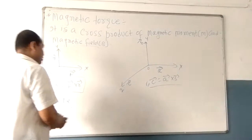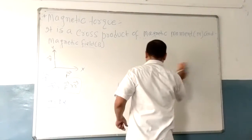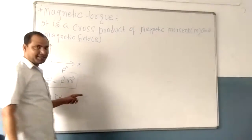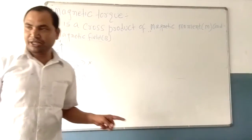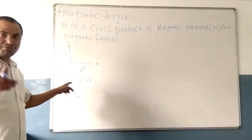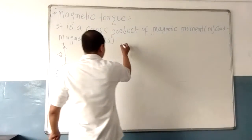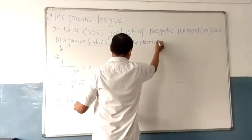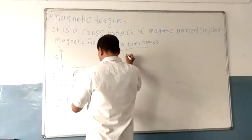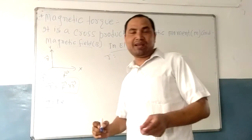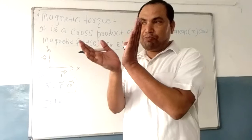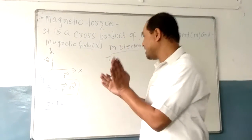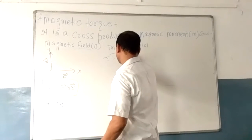I have taught you in the electrostatics chapter that torque is equal to F·r·sinθ, and maximum torque occurs when θ tends to 90 degrees. In mechanics, torque is equal to F·r·sinθ, and maximum torque occurs when the angle between the force and position vector is 90 degrees. So sin 90° = 1, and torque equals F·r.